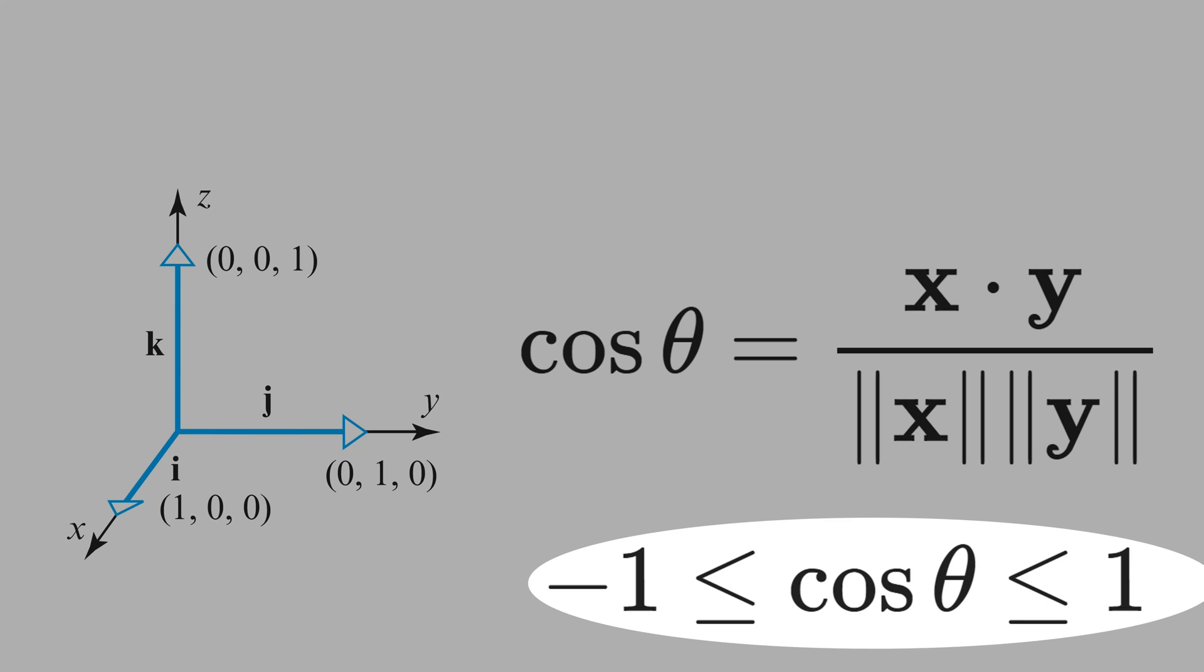By the way, cos theta can only vary between minus 1 and 1.